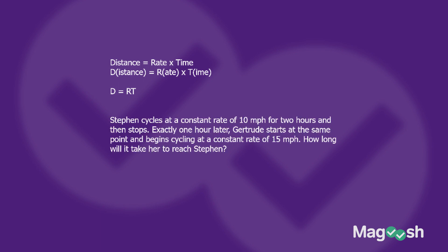Let's take a look back at Steven and Gertrude. Steven cycles at a constant rate of 10 miles an hour for two hours and then stops. Let's use our formula. We know the rate — that's the speed — so that's 10 miles an hour for Steven, and he goes for two hours. So 10 times 2 gives us a distance of 20 miles — that's how far Steven has gone.